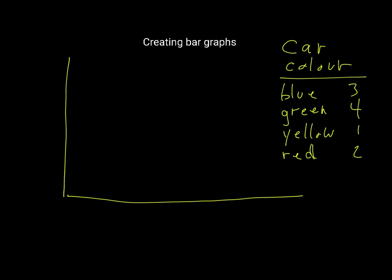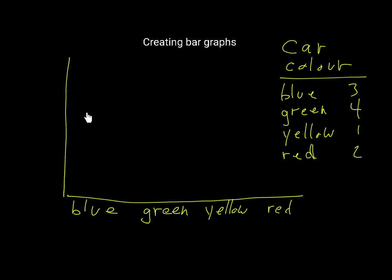You need to make sure they're evenly spaced: blue, green, yellow, and red. The next thing we have to do is work out the numbers along the y-axis, which will determine the size of our bars. We have to work out what steps our scale is going to use.